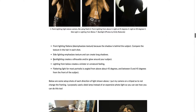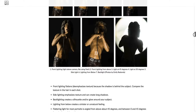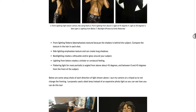Back lighting can create a silhouette and a glow around your subject — a silhouette where you can just see the outline of your subject. A quick tip, which we'll talk about more when we discuss portraiture: flattering light for most portraits is going to be angled from about 45 degrees and zero to 45 degrees from the front of the subject.